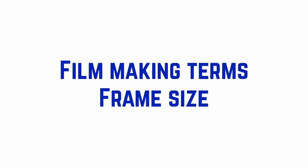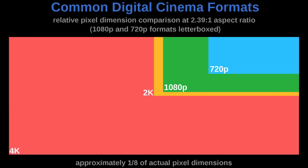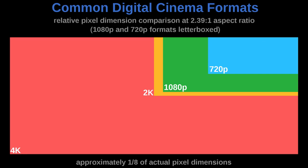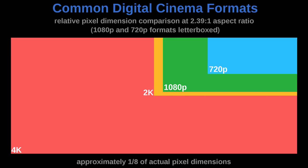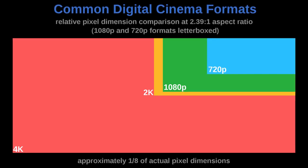Welcome to today's session where we will be looking at frame size — 4K or not 4K. Do I shoot at 720p, 1080p, 2K, or 4K, and what is the difference? In brief, 4K usually refers to the amount of pixels — around 4,000 pixels in width. For reference, 1080p resolution is 1920 by 1080.